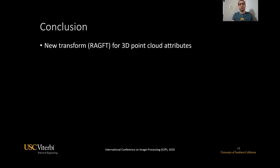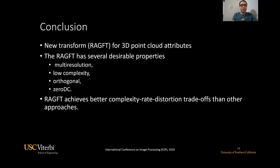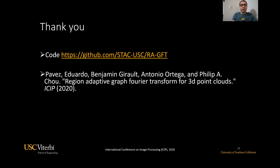In conclusion, we have proposed a new transform for compression of 3D point clouds. This transform has several desired properties, including multiresolution, low complexity, orthogonality, and zero-DC property. Also, the RAGFT achieves better complexity-rate-distortion trade-offs than other approaches, and it can outperform the RAT and the block GFT in terms of compression. Thank you. You can find the code on our website, and I'm happy to answer any questions.